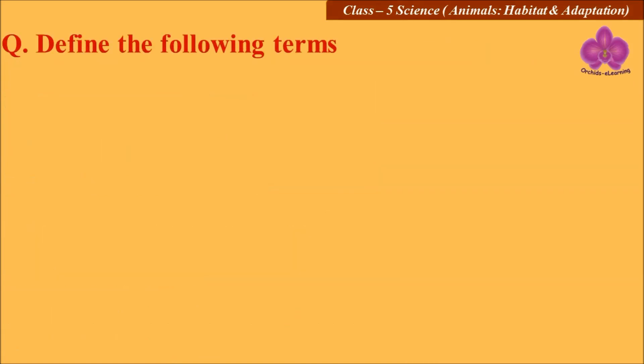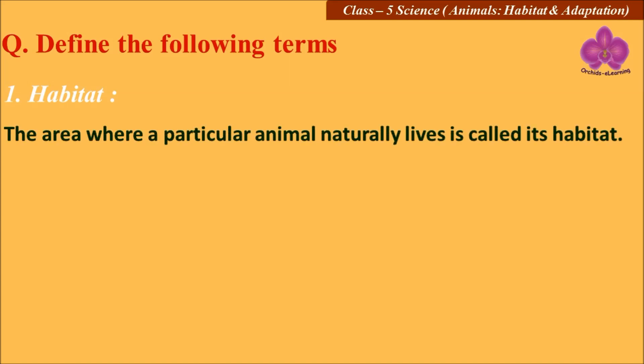Define the following terms. Habitat: The area where a particular animal naturally lives is called its habitat.